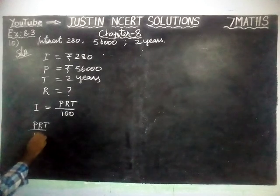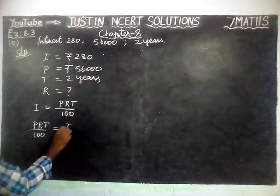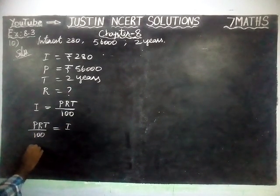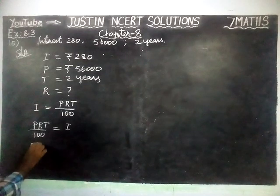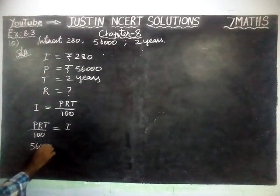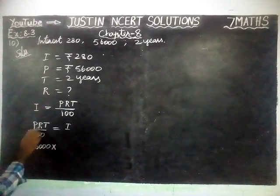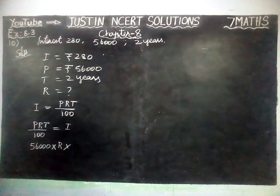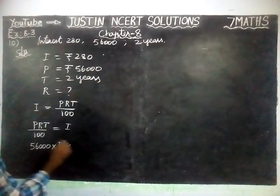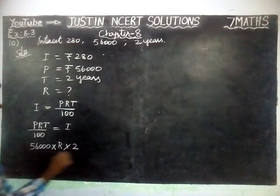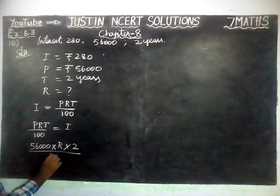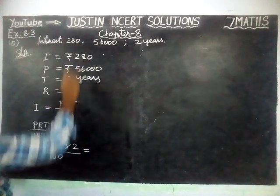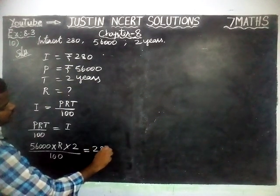(P × R × T) / 100 = Interest. Principal amount is Rs. 56,000, rate of interest we don't know so we keep it as R, and time is equal to 2, divided by 100 is equal to 280.